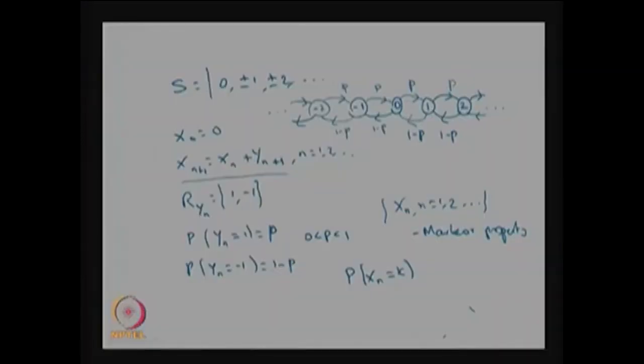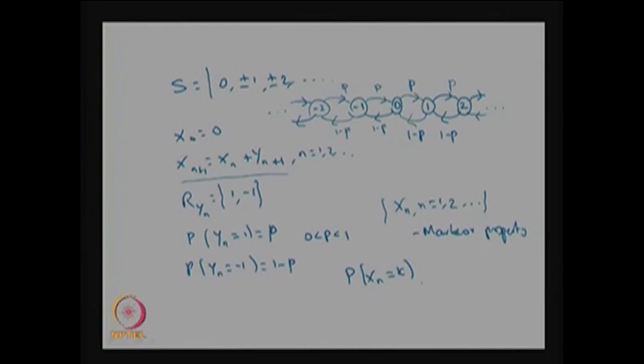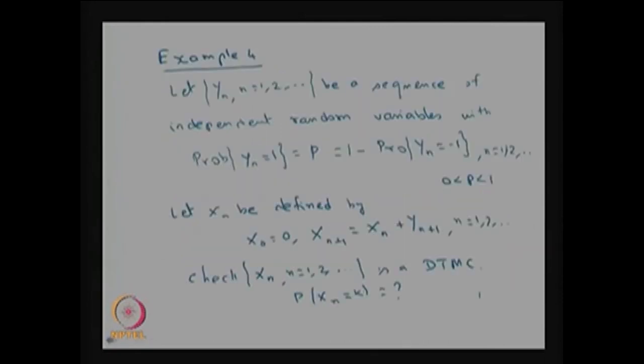The key difference between this example and the earlier one is that the state space here is countably infinite. Therefore p is not a simple finite matrix but one with many elements, making computation of p^2 and p^n more complicated than for a square matrix. The running index for x_{n+1} = x_n + y_{n+1} starts from n = 0, 1, 2, and so on.